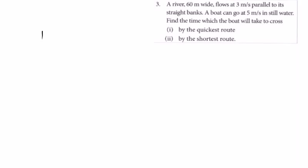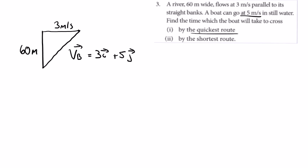Question 3: A river 60 meters wide flows at 3 meters per second. So I've got my 60 meters, my 3 meters per second. The boat can go at 5 meters per second, so the velocity of the boat is going to be 3i plus 5j as a vector.